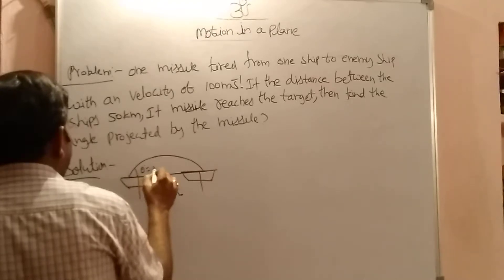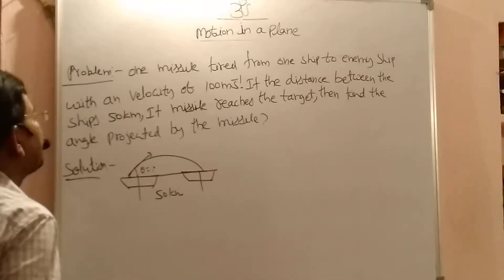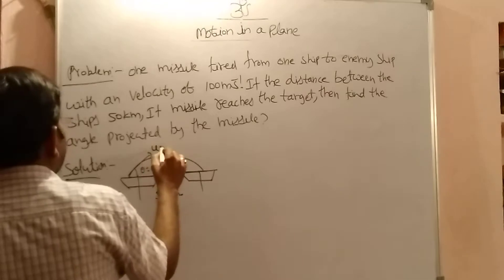How much angle making we are finding. Velocity of the missile given. What is the velocity of the missile? 100 mps.